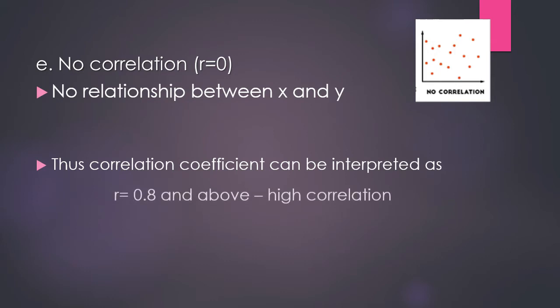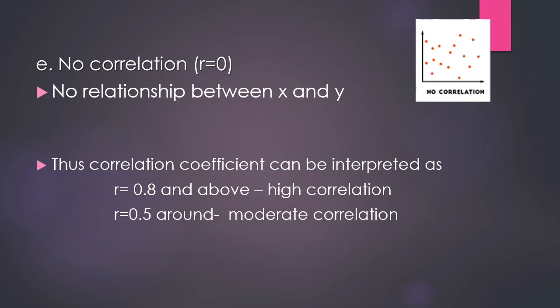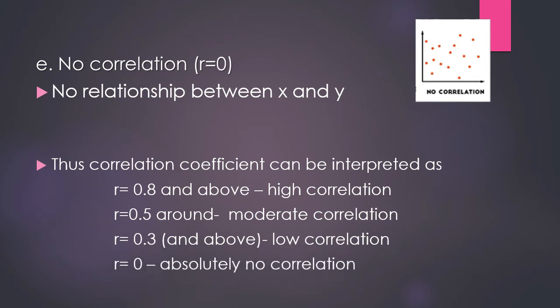The correlation coefficient can be interpreted as follows: an r value of 0.8 and above shows high correlation; an r value around 0.5 shows moderate correlation; an r value of 0.3 and above shows low correlation; and an r value of zero shows no correlation. From calculations we get a value between 0 and 1 indicating the amount of relationship between the variables.